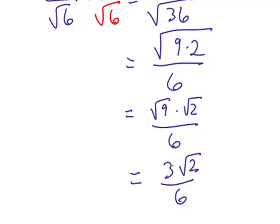And then 3 and 6 can divide out a little bit. 3 into 3 is once, and into 6 is twice. Our final result here is square root of 2 over 2.